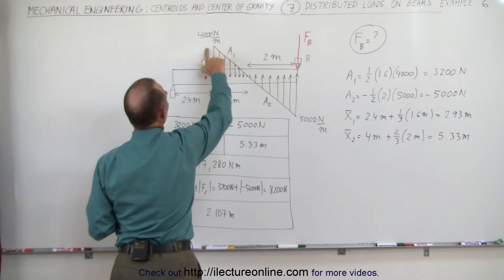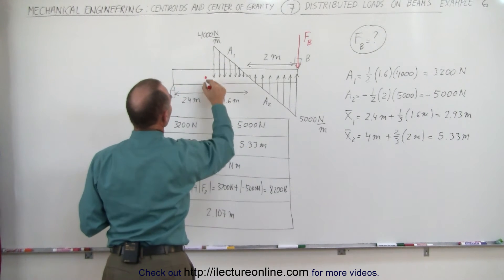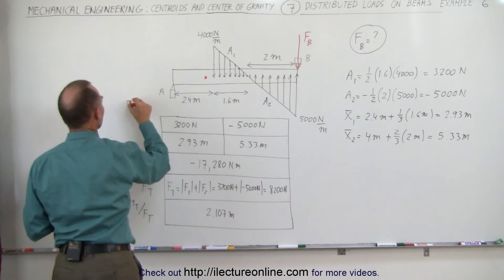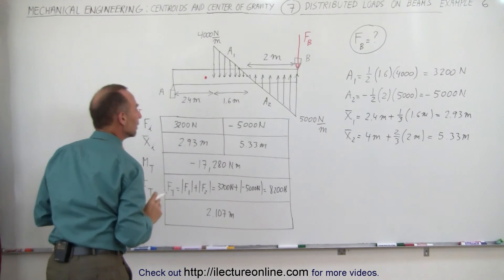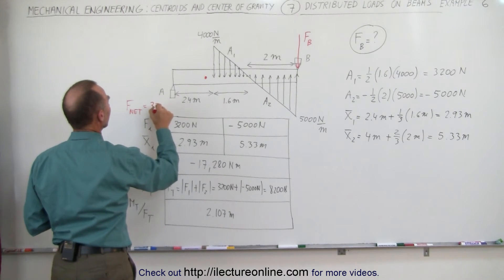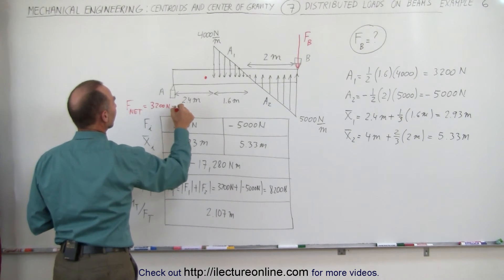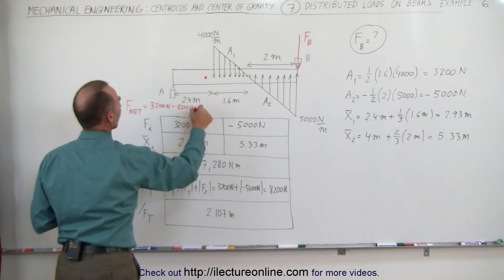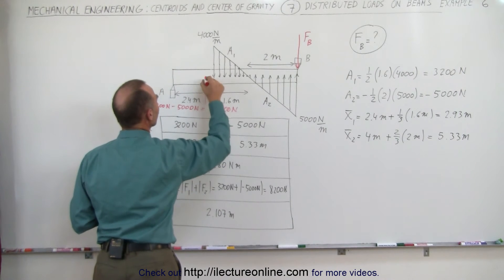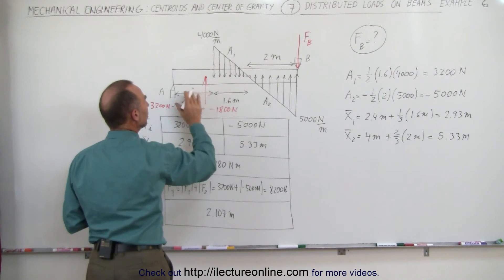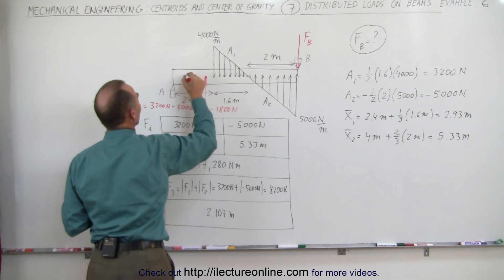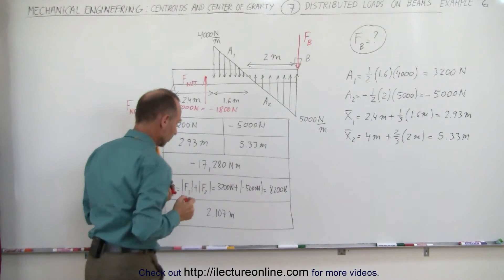It appears as if all the force, now the net force, F net, we do have to take the sign into consideration, is equal to a positive 3,200 newtons minus 5,000 newtons, which is minus 1,800 newtons. In other words, there's an 1,800 newton force pushing in this direction, causing a reactionary force at B. This is force net in upward direction.